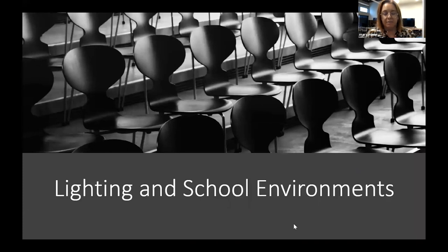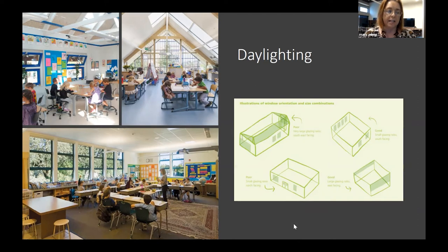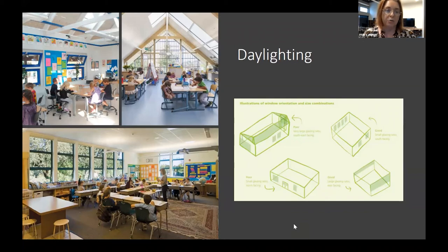I want to talk about some of the different ways we experience light, starting with the school environment. Daylighting is far and away the most important factor — in fact, lighting in general has been shown as the most important impact on users of a space. If we can control lighting in a space, we are controlling and maximizing how someone experiences that space.